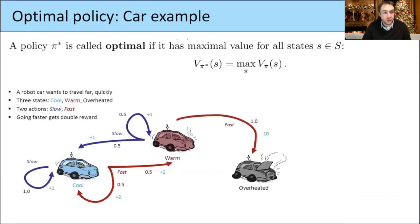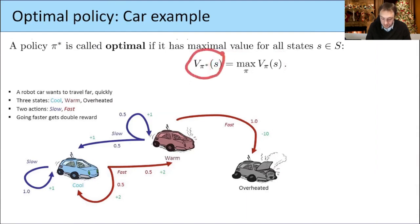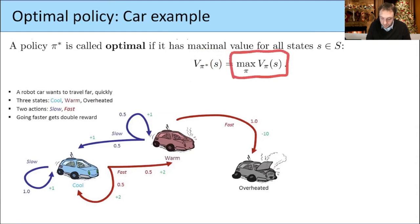We introduced what we called an optimal policy, denoted pi star. This is defined to be the policy which maximizes this value, meaning the value of the optimal policy at any state — the expected total reward starting in state S — is given by the maximum over all possible values across all possible policies.